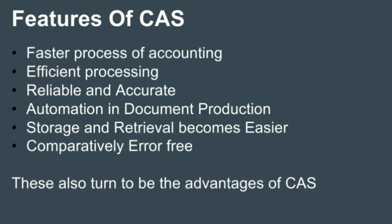Now the features of a computerized accounting system. It is actually a faster process of accounting, whereas manual accounting will take a lot of time. It has efficient processing because there is no human work involved, so the time consumed for completing each task is reduced. Also, since it is done through the computer, the information derived is reliable and accurate most of the time. Previously we were presenting final accounts in paper documents, but now through this computerized accounting system, we have automated this document production.